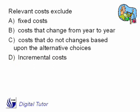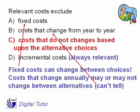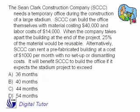Freeze your frame and work this one. Notice that we're asking what to exclude — we're going to leave out costs that don't change based on the alternatives. Fixed costs can change, and costs that change from year to year may change with the alternatives. Fixed costs are not going to change.